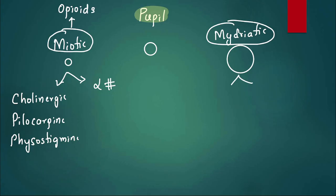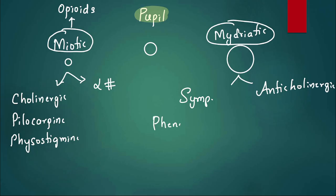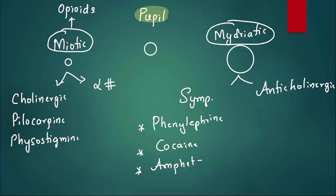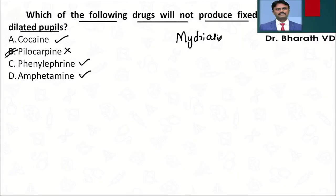Coming to mydriatic: mydriasis can be seen with sympathetic drugs and anti-cholinergics. Sympathetic drugs — for example, phenylephrine, which we use in treatment — and others like cocaine and amphetamine, where we see dilated pupils in poisonings. Anti-cholinergics where you see dilated pupils are mainly atropine derivatives: atropine, homatropine, cyclopentolate, and tropicamide.